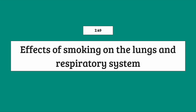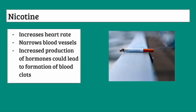Specification point 2.49 looks at the effects of smoking on the lungs and the respiratory system. This is really a case of memorizing and understanding the different effects. First, nicotine increases the heart rate, narrows blood vessels, and can cause blood clots.